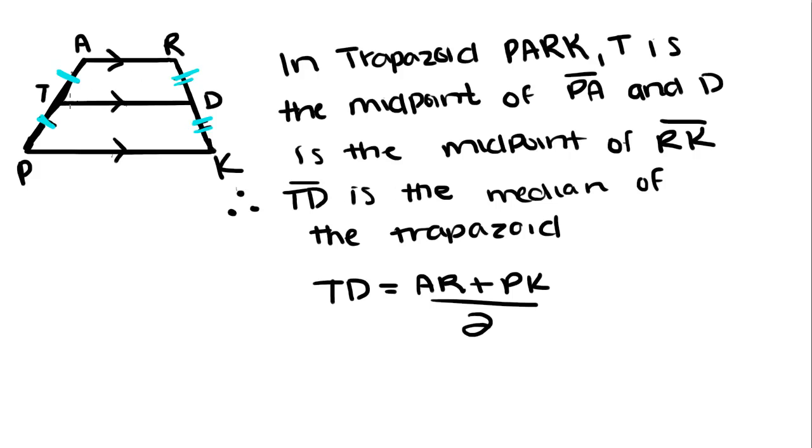Therefore, TD, this segment right here, is the median of the trapezoid. So when a line goes from one midpoint of one side of a trapezoid to another midpoint of the other side of the trapezoid, it is the median of the trapezoid. And the median of a trapezoid is equal to the sum of the bases divided by two.